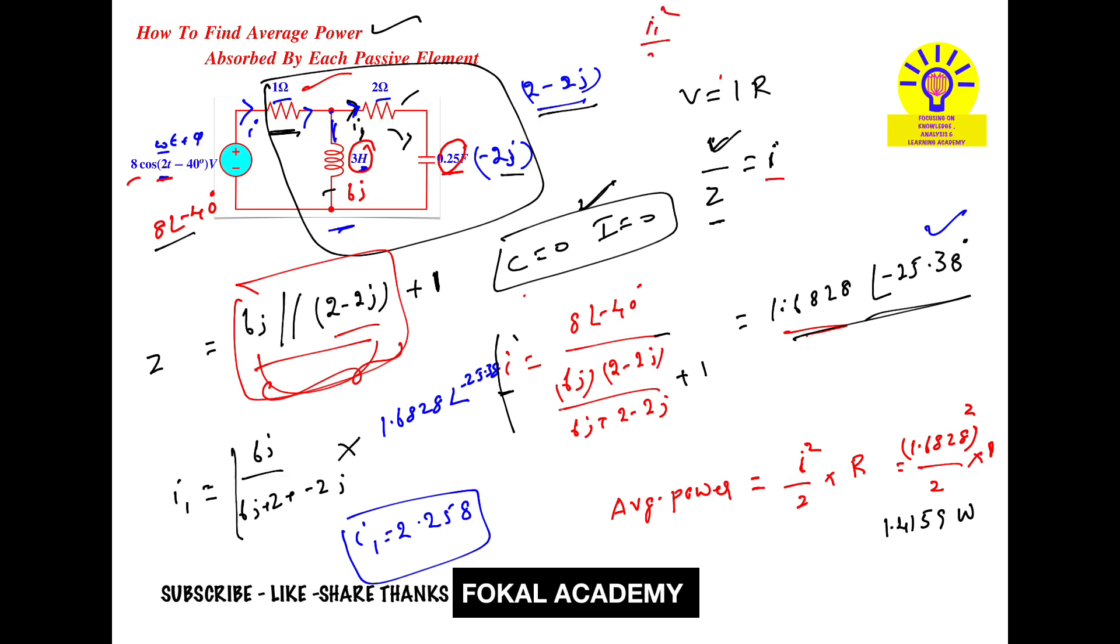The average power is P = I1²R/2 = (2.258)²(2)/2. The 2s cancel, giving us (2.258)²/2 = 5.097 watts. This is the average power in the 2 ohm resistor.